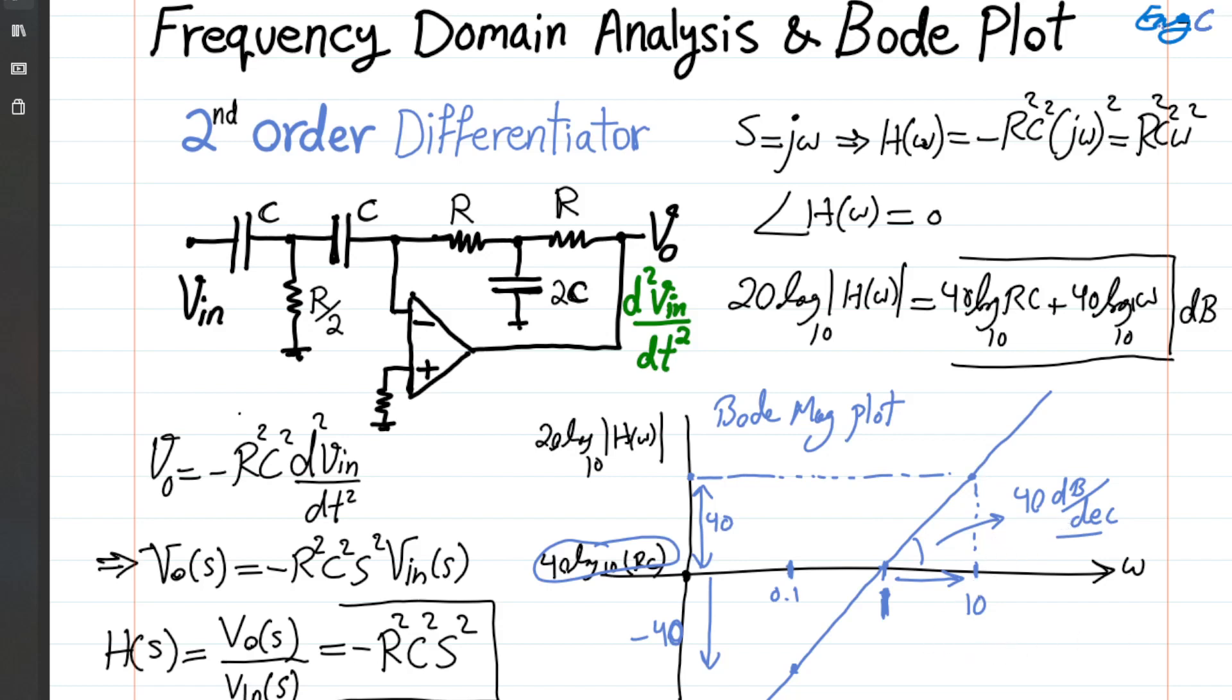I hope that this is helpful in terms of understanding the Bode plot representation using the example of the second order differentiator and also understanding what we mean by saying 40 dB per decade or in another example, say 20 dB per decade.